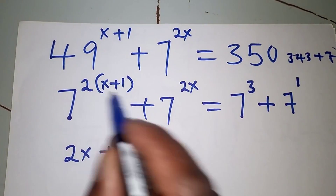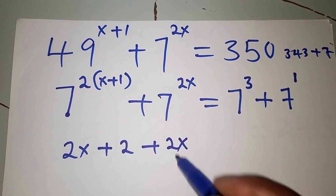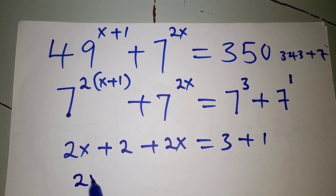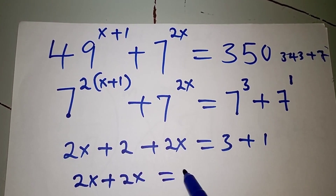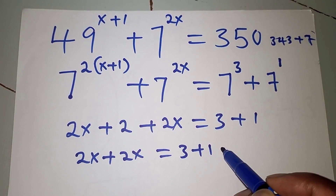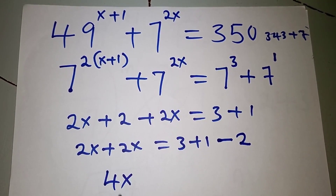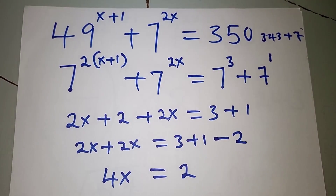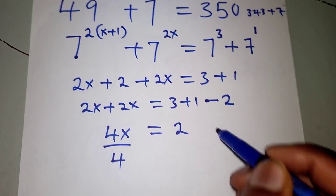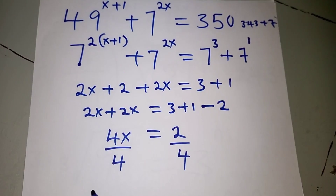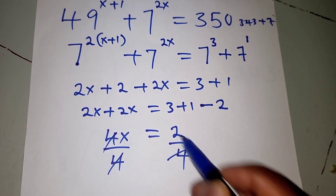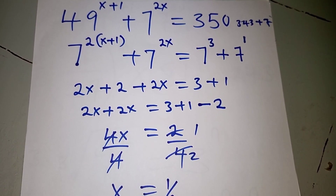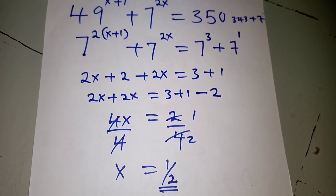We can now eliminate the base 7. We get 2x plus 2 plus 2x equals 3 plus 1. Collecting like terms: 2x plus 2x equals 3 plus 1 minus 2, giving us 4x equals 2. Dividing both sides by 4, we get x equals 1 half. So x equals one half — that is the value of x.